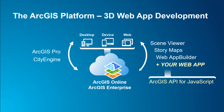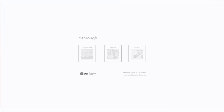From an overview perspective, we'll first talk about how we used Pro and CityEngine to publish the required layers for this urban planning application to Portal, and then we'll talk about how we used the JS API to create the application itself.